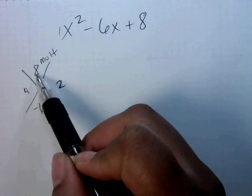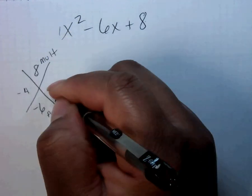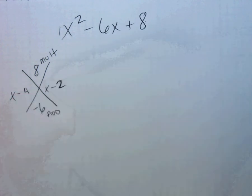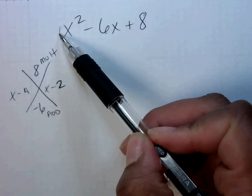But I need a positive 8 when I multiply, but a negative 6 when I add. That means they both need to be negative. And normally I would take this number and divide, but because it's 1 I'm done.